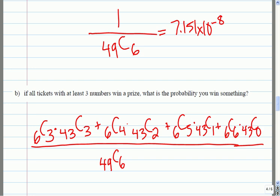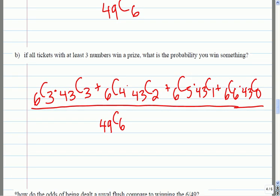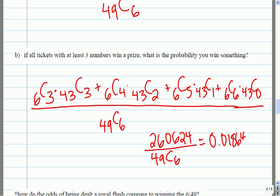So, when I work this out in the calculator, I end up with the top of the fraction is... There's quite a few tickets that win something. So, I ended up with 0.0186, let's say four. We'll round it to there.